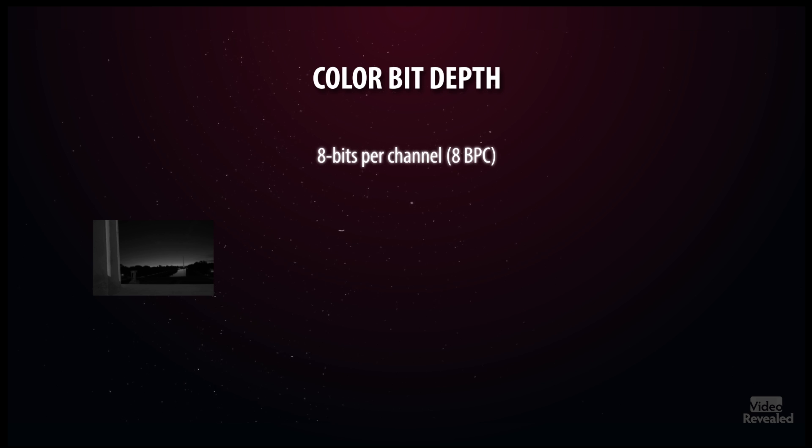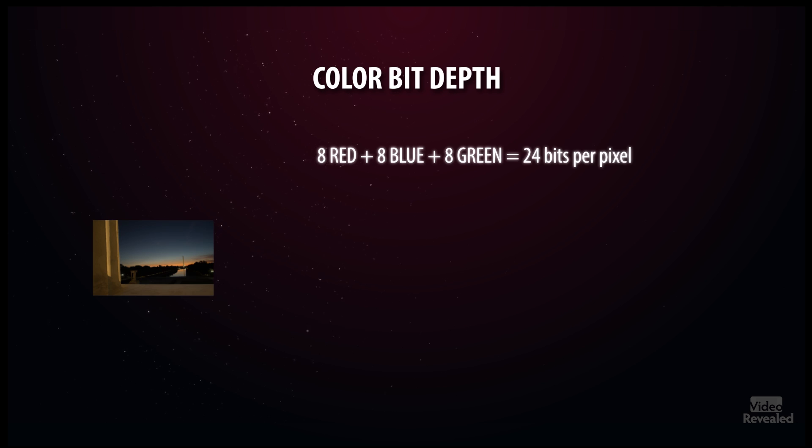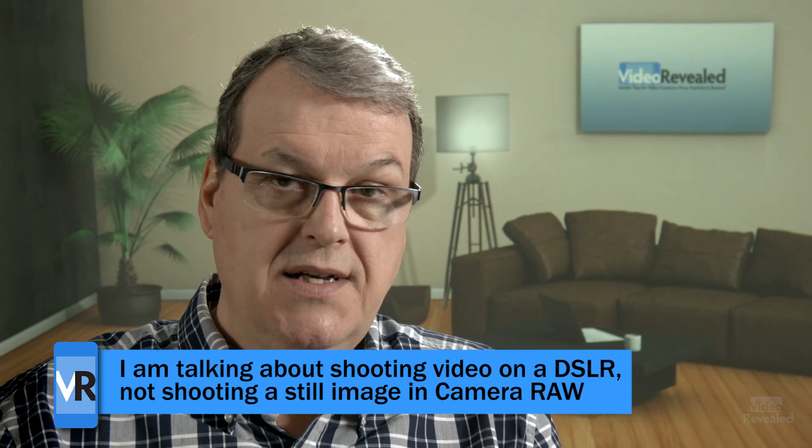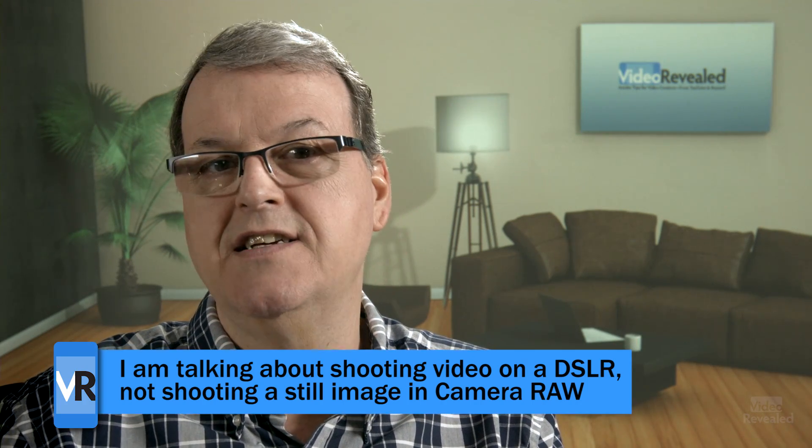We'll start with 8 bits per channel. Eight red, eight blue, eight green equals 24 bits per pixel. Each channel gets 256 shades. That's where a lot of people get confused — is this a 24-bit image or an 8-bit image? It's 8 bits per channel, which equals a 24-bit per pixel image. Most people at the low end will only ever work with 8-bit images — 8-bit in Photoshop, shooting with a DSLR at 8-bit. That's okay, but you'll find some restrictions.